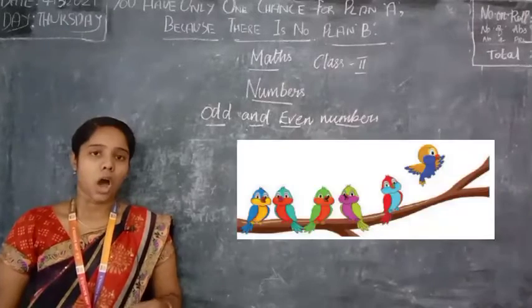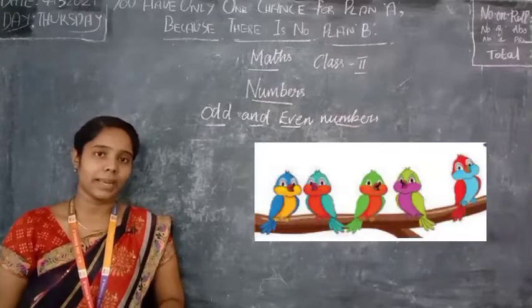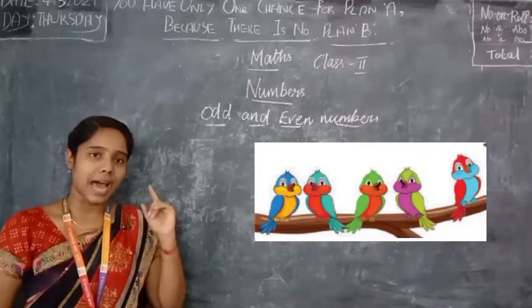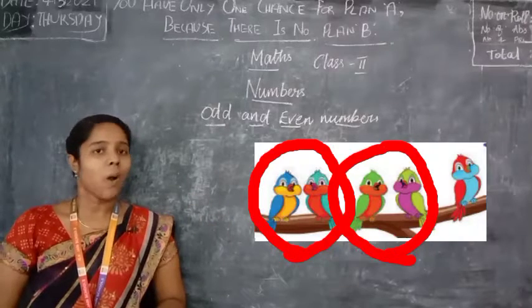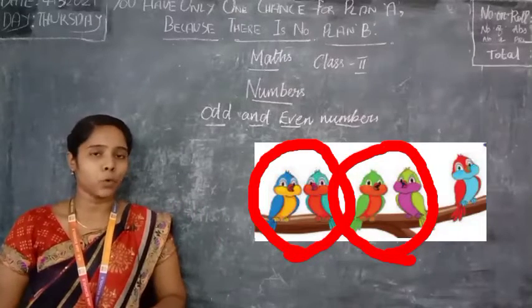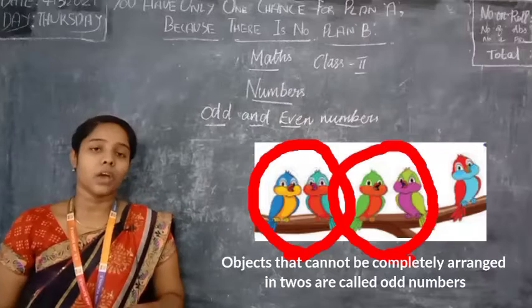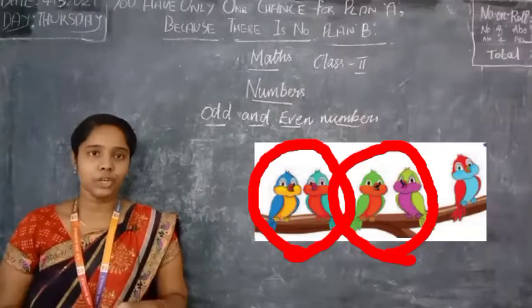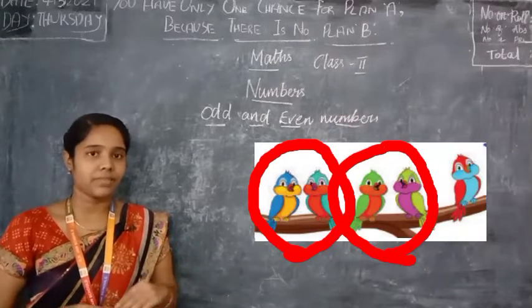Now look at this picture. Out of the six birds, one bird left the branch. So how many are remaining? We have only five birds. Now let us make sets of two from these five birds. First pair — one set. Second pair — another set. And we have one remaining bird. So out of five birds, we were able to make only two complete sets, and one bird is remaining. The objects that cannot be completely arranged in twos are called odd numbers. So the number five is an odd number.